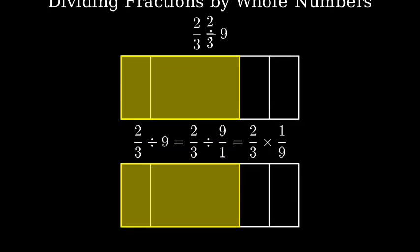Let's see what this looks like visually. First, we'll divide our two-thirds into nine equal vertical sections. Each of these sections represents one-ninth of two-thirds, which is our answer.